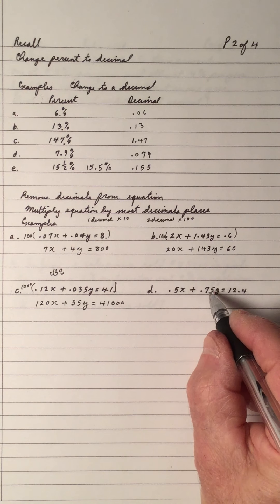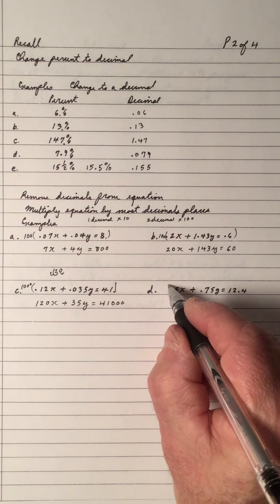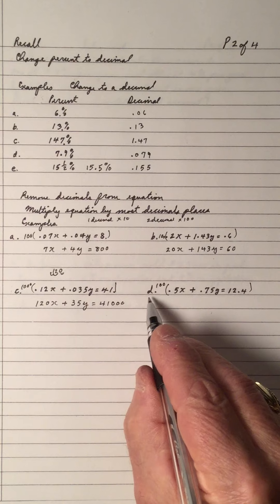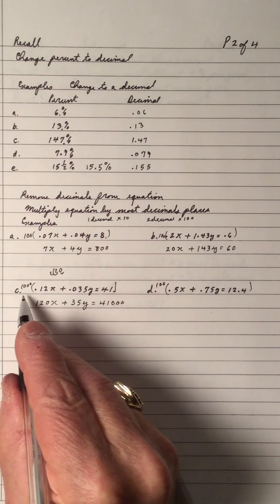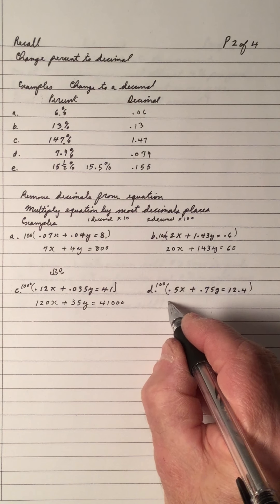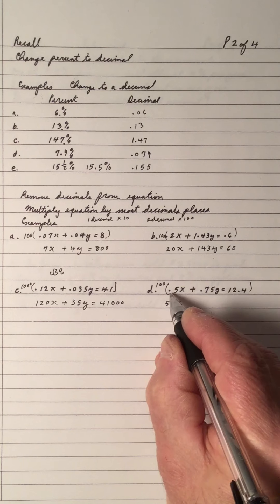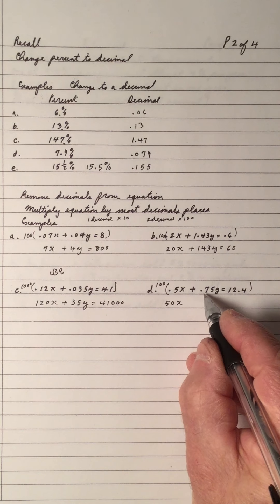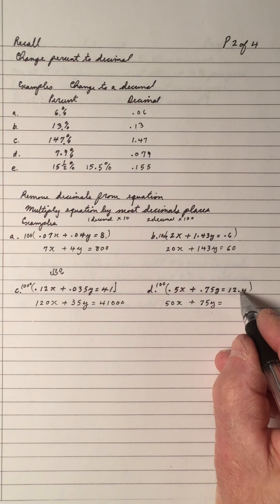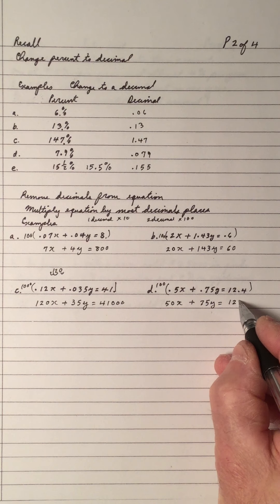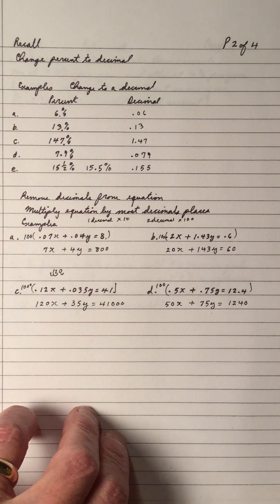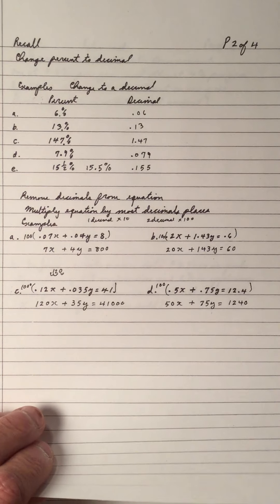Example D: one decimal place, two decimal places, one decimal place — so multiply this equation by 100 to eliminate all decimals. 100 × 0.5 = 50, moving two places with an extra zero. Two places gives 75. Moving two places, you need another zero. That's the review of changing percent to a decimal and eliminating decimals from equations to make solving easier.